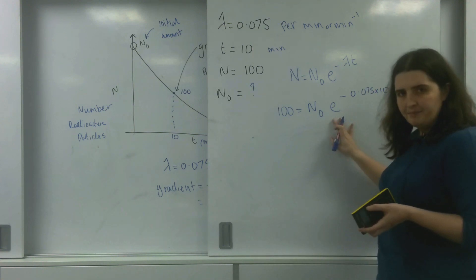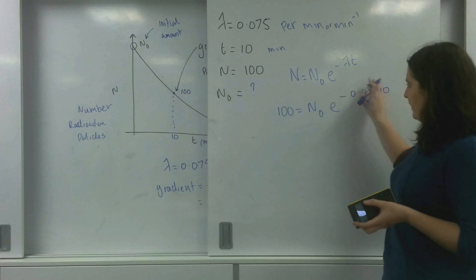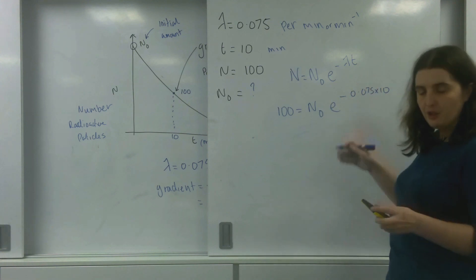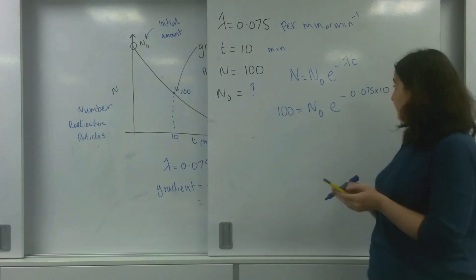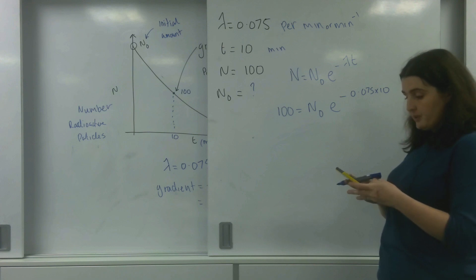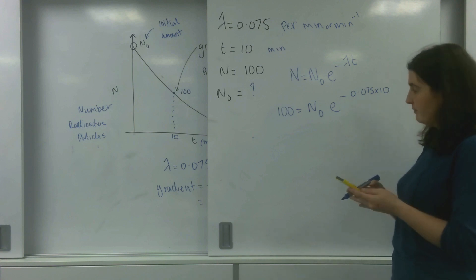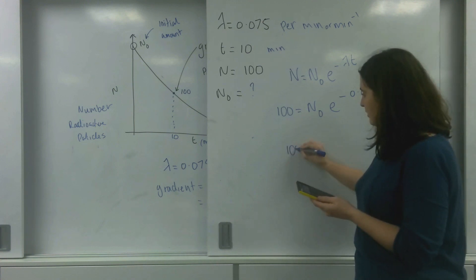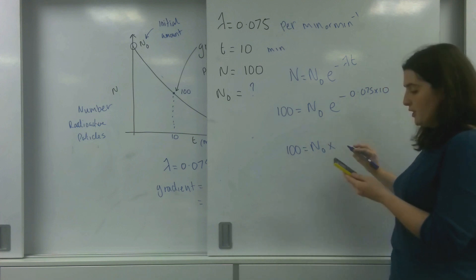So this e here to the power, this would end up as a number. And you can find out that number by putting this into your calculator. So 0.075 times by 10, then e to the negative of that.